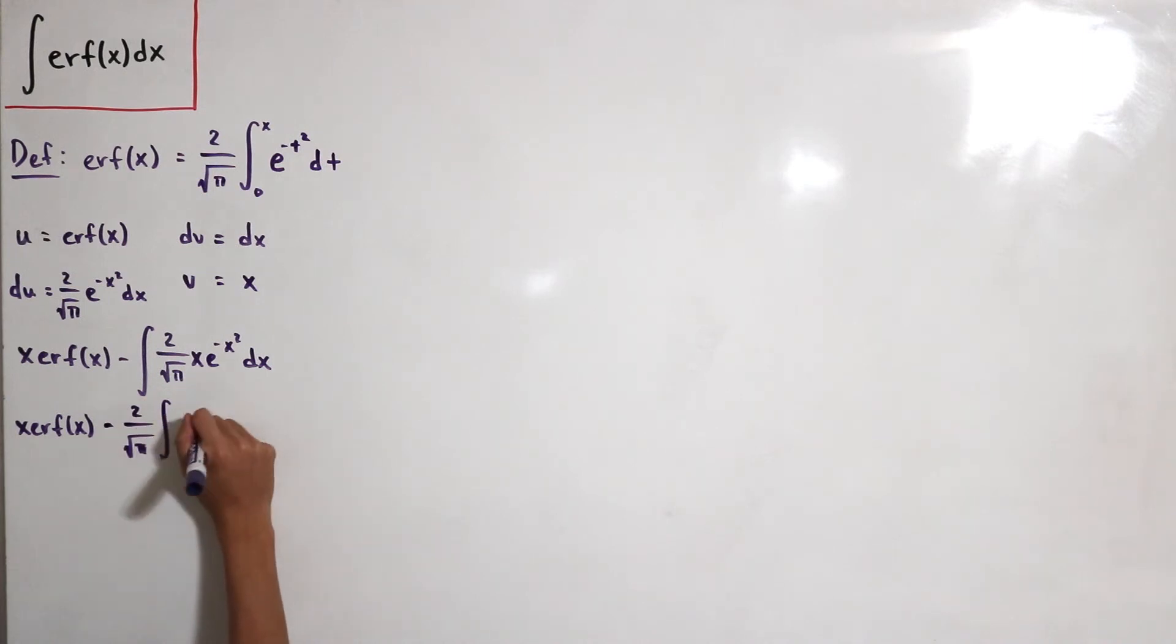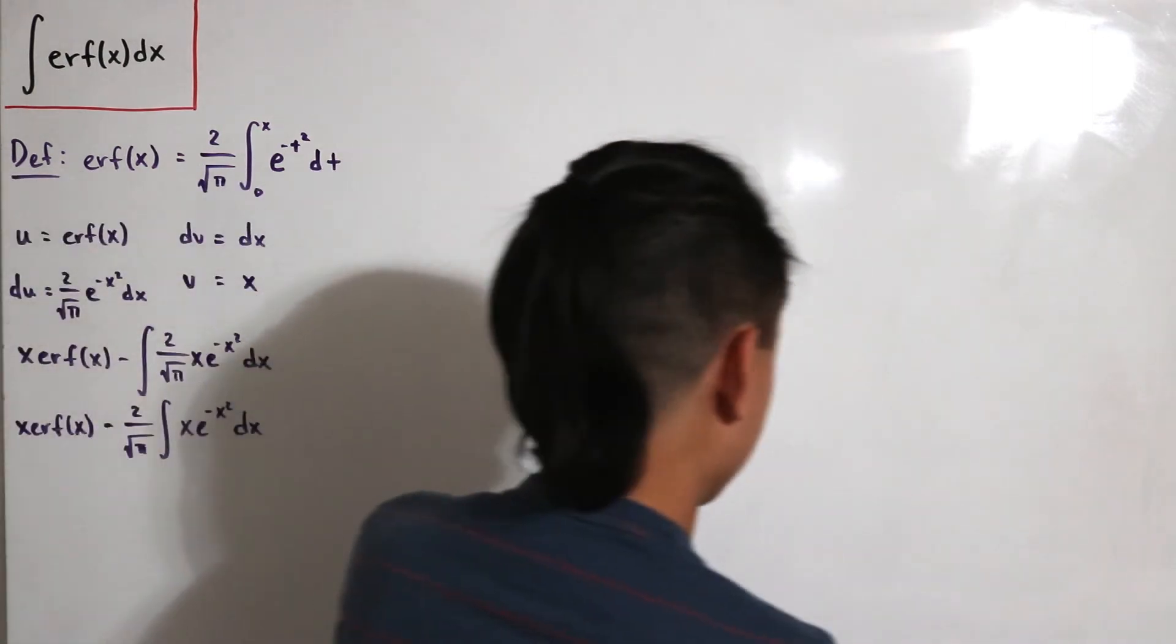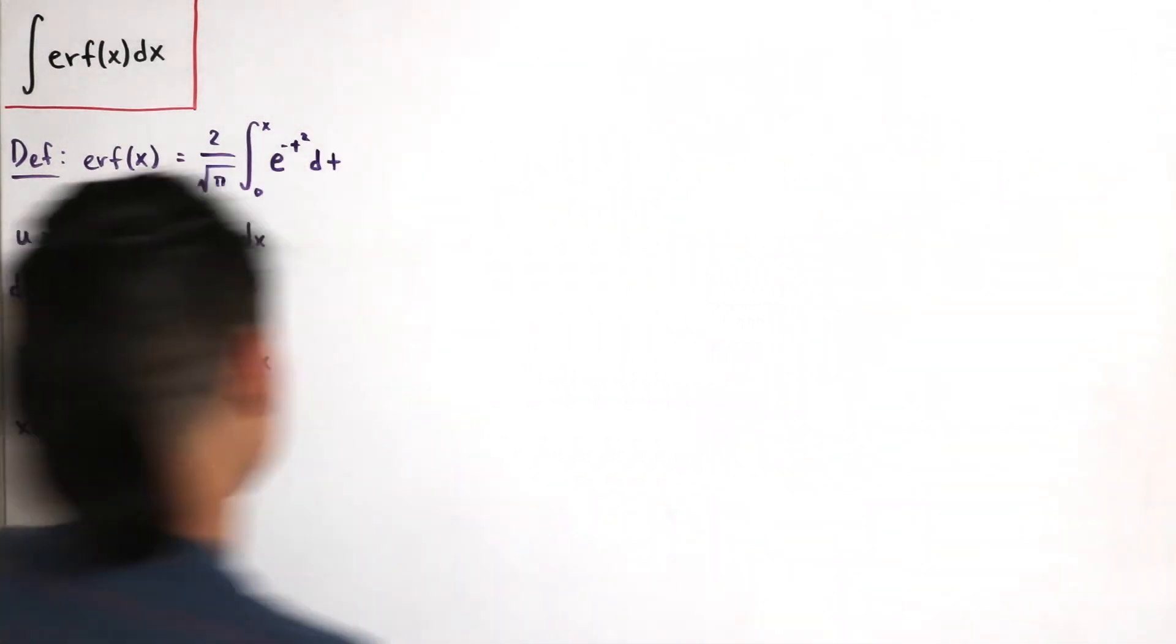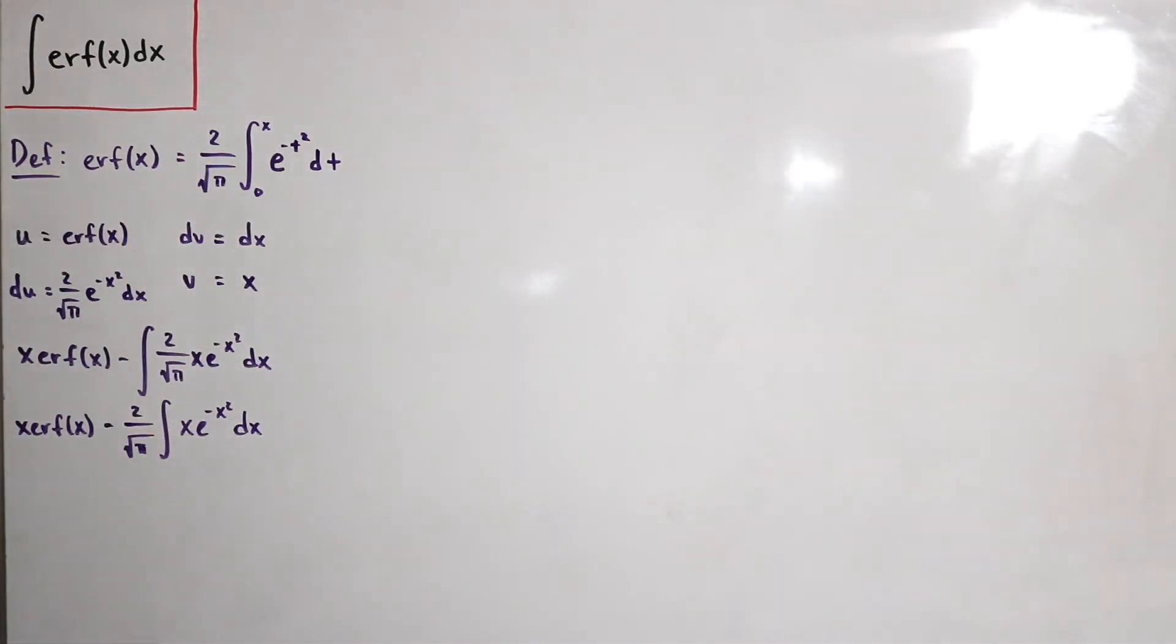So we have, I have to write, x erf(x) minus 2 divided by square root of π then we have the integral of x e to the power of negative x square dx. And integrating this is simple, you just do a u-substitution.